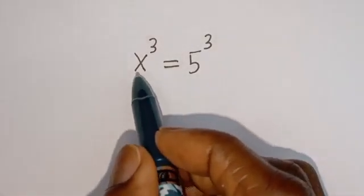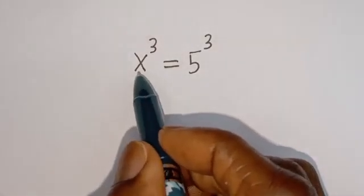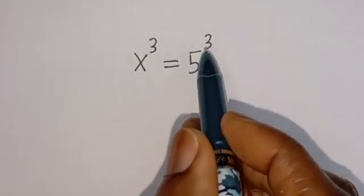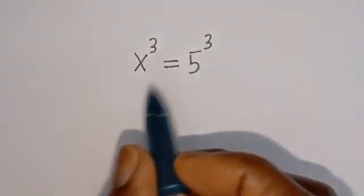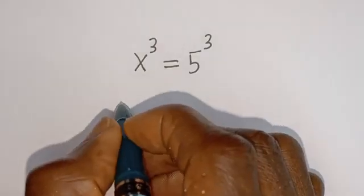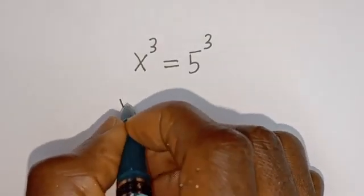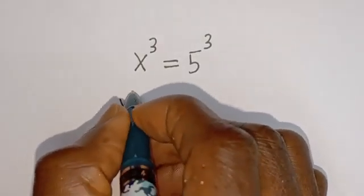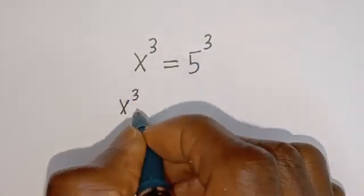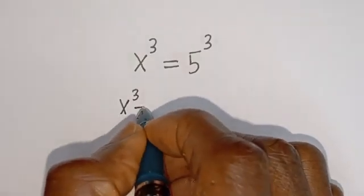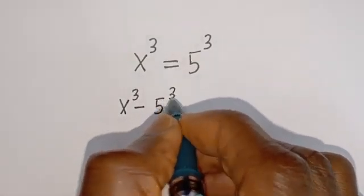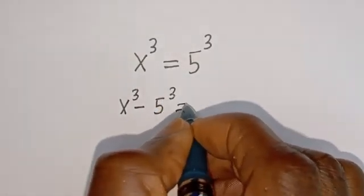Hello, you are welcome. How to solve for s in this equation: s to the power of 3 is equal to 5 to the power of 3. From here, if we bring 5 to the power of 3 to this side, it becomes s to the power of 3 minus 5 to the power of 3 is equal to zero.